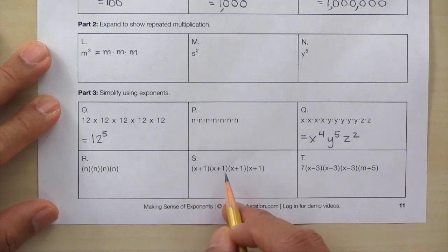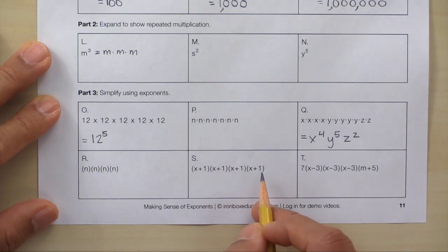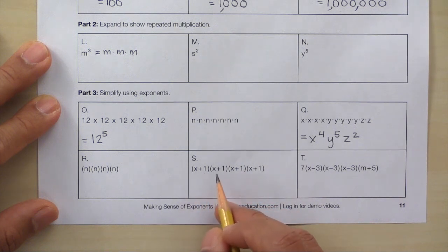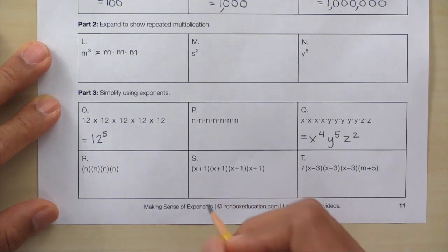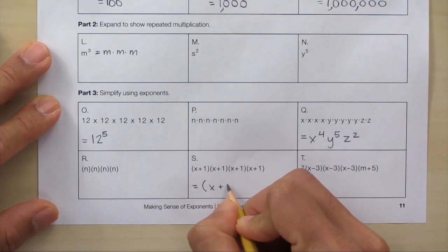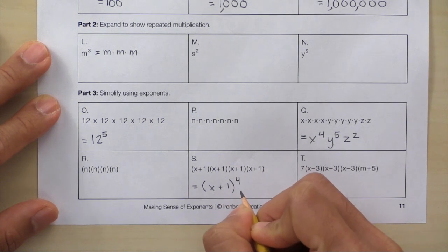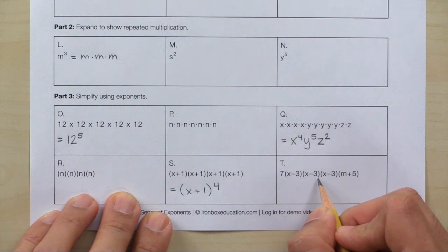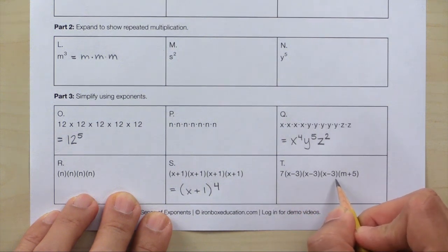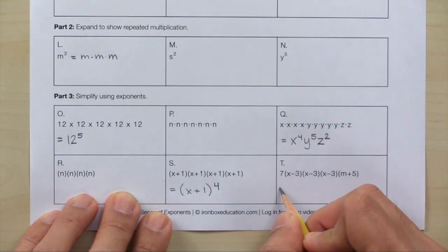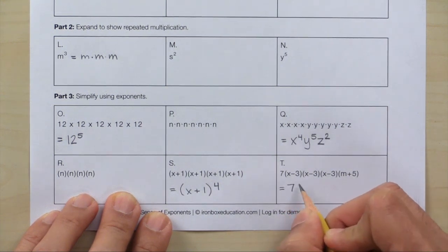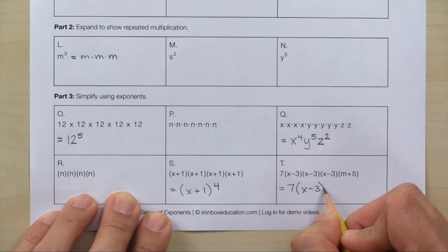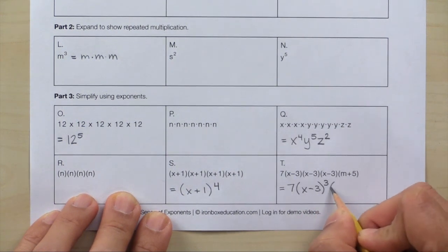Now for box S: here's (x plus 1) times (x plus 1) times (x plus 1) times (x plus 1), so we have x plus 1 to the first, second, third, fourth power — here we have (x plus 1) to the fourth power. Finally, box T: here we have 7 times (x minus 3) times (x minus 3) times (x minus 3) times (m plus 5), and we can simplify this by writing 7 times (x minus 3) to the third power times (m plus 5).